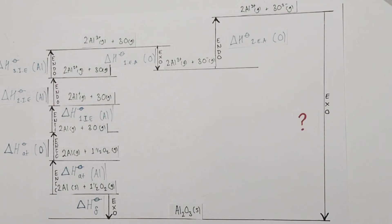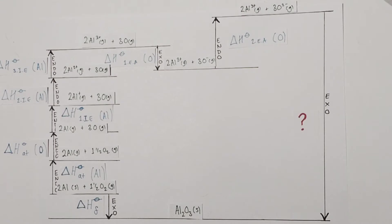Finally, we come to the second electron affinity for oxygen, turning those O⁻ ions into O²⁻ ions. Weirdly, that's an endothermic process. We're trying to put negative electrons onto already negative ions, so we have to overcome the natural repulsion between two negative species — that requires energy to be put in, hence the process is endothermic. In fact, all second electron affinities for negative ions will be endothermic processes.